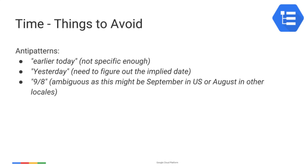For example, sending an email about something that happened 'earlier yesterday' causes the reader to search for a header in the initial email and start doing math in their head. Phrases to avoid are things like 'earlier today' because it's not specific enough, or 'yesterday' because we need to figure out the implied date when issues take multiple days to resolve. Don't use dates like '9-8' because it's ambiguous and may be interpreted differently in other locales.